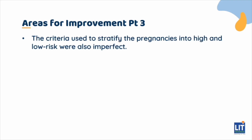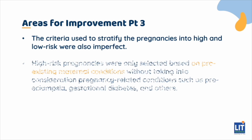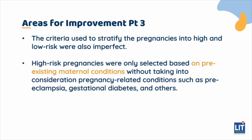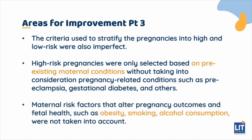The criteria used to stratify the pregnancies into high and low risk were also imperfect. High-risk pregnancies were only selected based on pre-existing maternal conditions without taking into consideration pregnancy-related conditions such as pre-eclampsia and gestational diabetes. Maternal risk factors that alter pregnancy outcomes and fetal health such as obesity, smoking, and alcohol consumption were not taken into account.